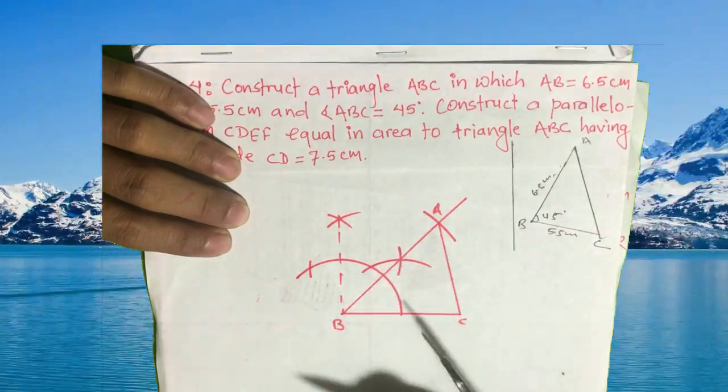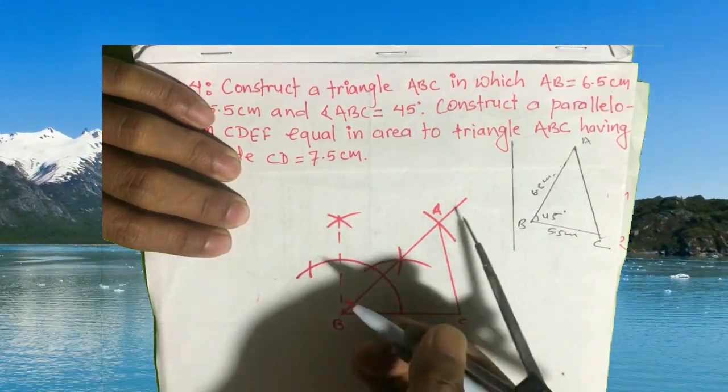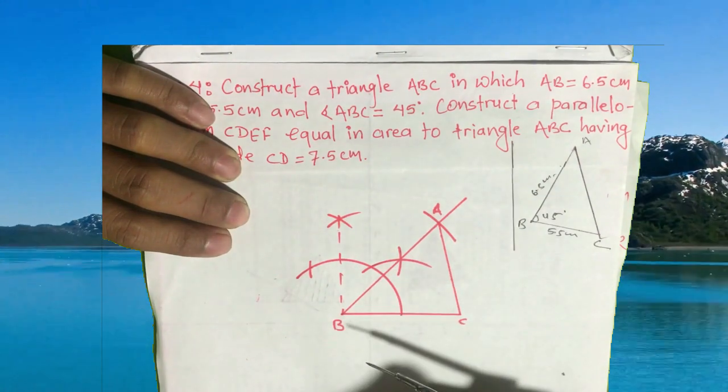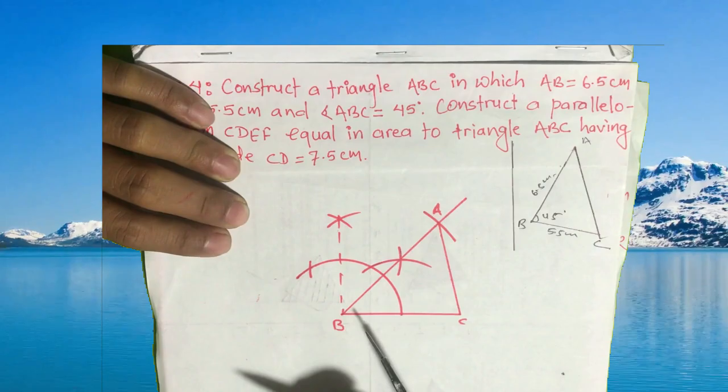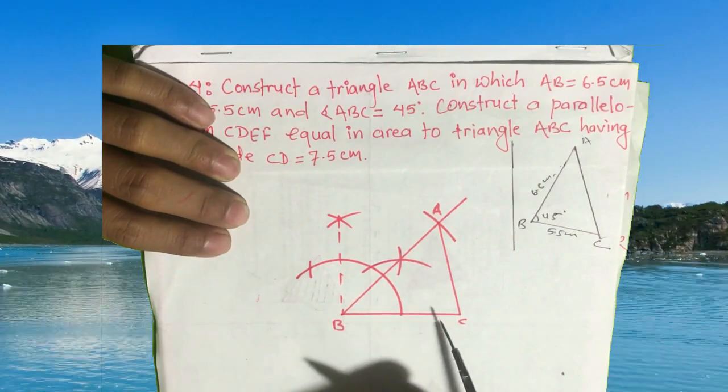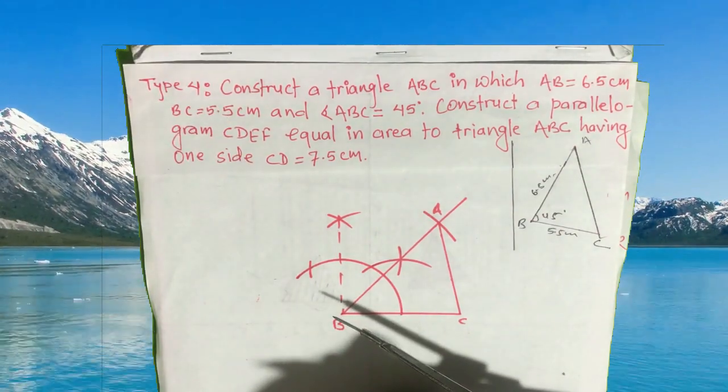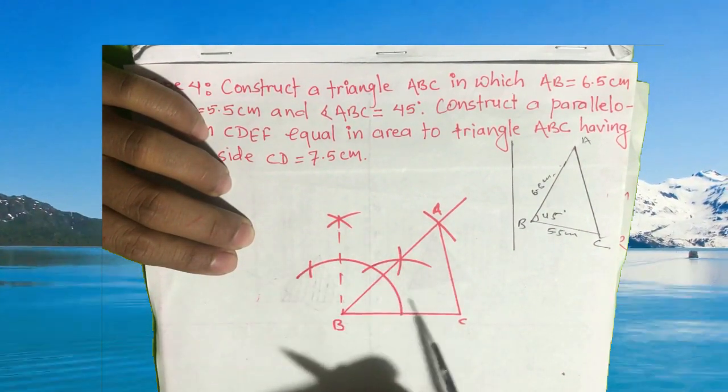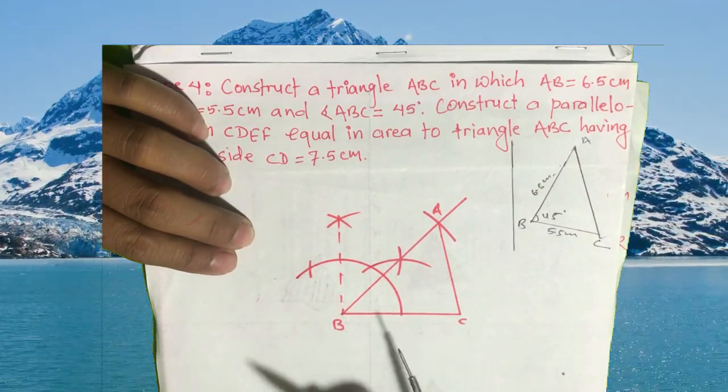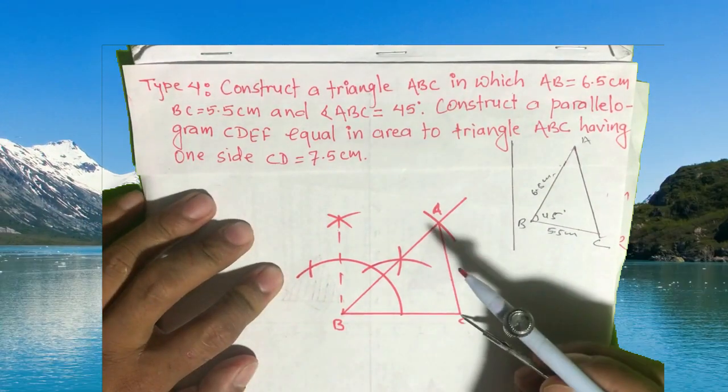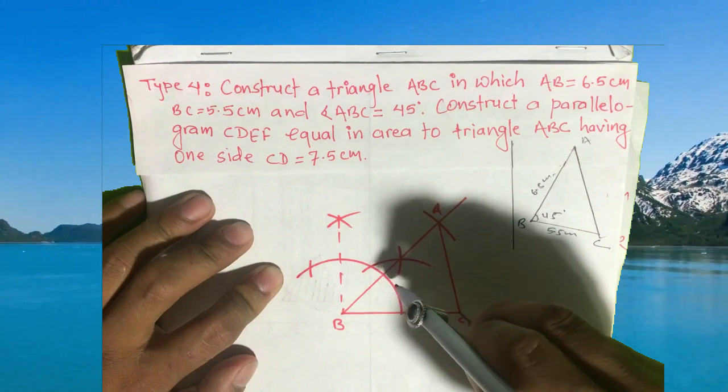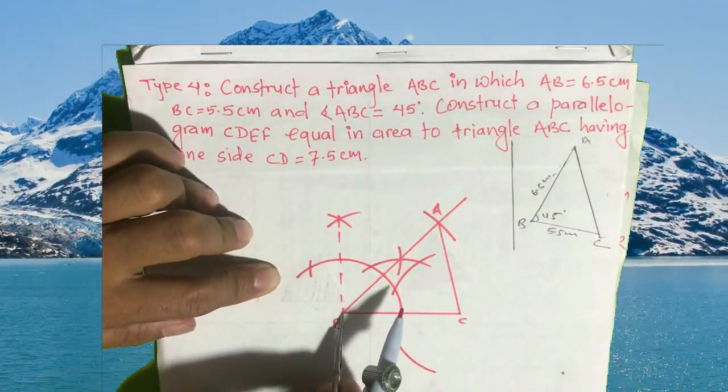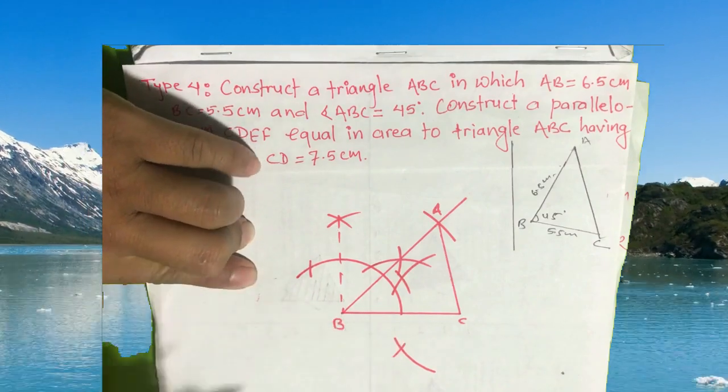Now we construct parallelogram CDEF equal to triangle ABC. We know that the area of a parallelogram is double that of a triangle. So we need to select half the altitude of triangle ABC. We find the perpendicular bisector of the base. From B to here, join it by dotted line.